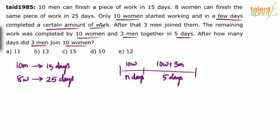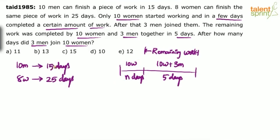What can be exactly determined is the remaining work. We can find out how much remaining work was done by 10 women and 3 men in 5 days. Once you find the remaining work, you will know how much was done by 10 women in n days, and then you can find the number of days. These values are given to us, so we use them to find the answer.